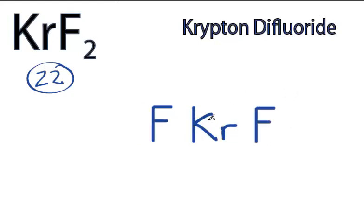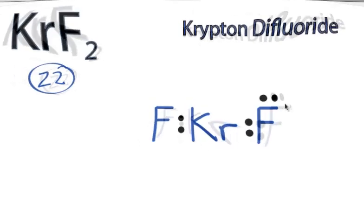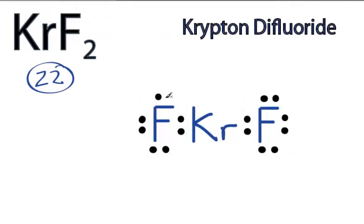We have 22 valence electrons. We'll put two between atoms to form chemical bonds, and then go around the fluorines to fill their octets, until we use 22 valence electrons. So we have 4, 6, and 16 — then back to the central krypton atom. That gives us 18 valence electrons used up, but we have a total of 22. So for these last four, we're going to put those right here on the central krypton.